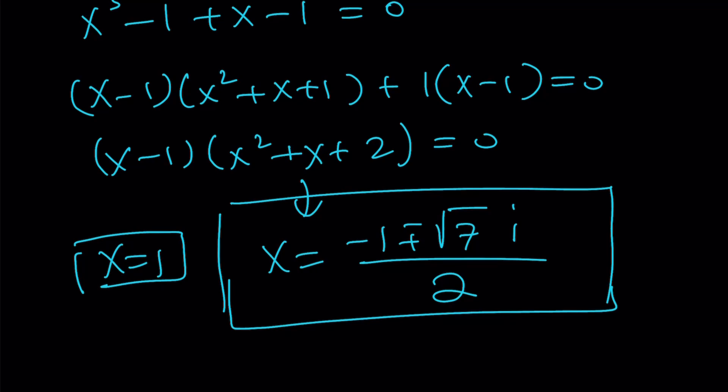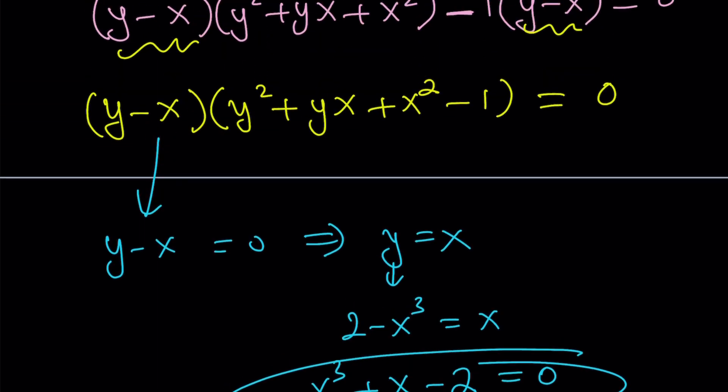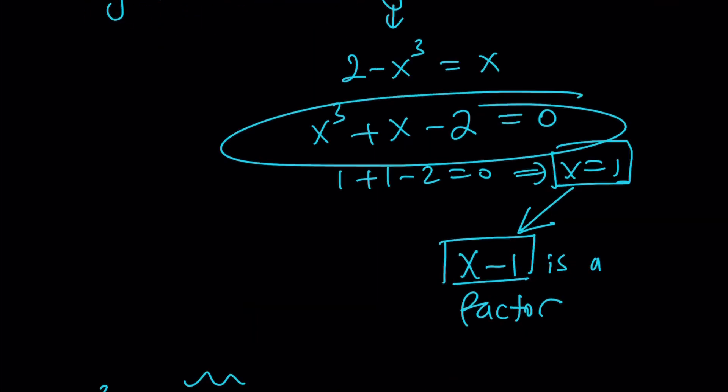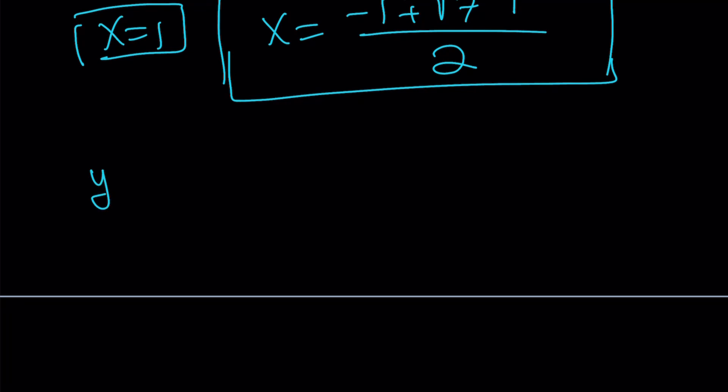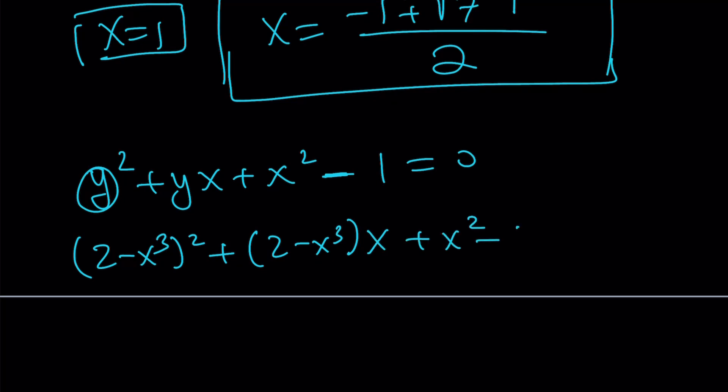So what am I going to do with them? We have another factor. So we're going to deal with this right now. So if you take a look at this equation, there's a couple things you can do about it. But let's go ahead and replace y with 2 minus x cubed, and let's see what happens. 2 minus x cubed squared plus 2 minus x cubed x plus x squared minus 1 equals 0.